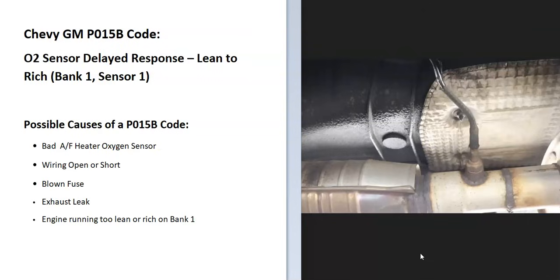The onboard computer is seeing a problem with one of these sensors. Some possible causes: it could be a bad oxygen sensor, a wiring issue, a blown fuse, or an exhaust leak — so be sure to look for any exhaust leaks since a leak can throw these sensors off. It's also possible the sensor is good but the engine is running too lean or rich on bank one. Usually when that happens you'll get other codes too, so pay attention to those.